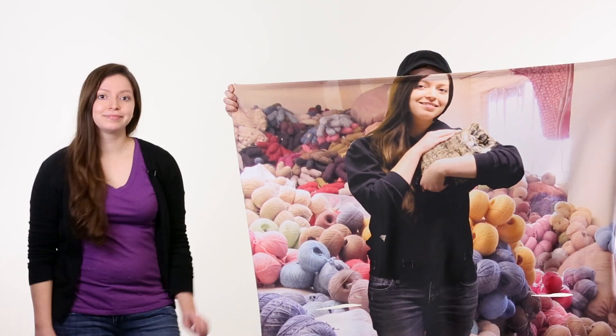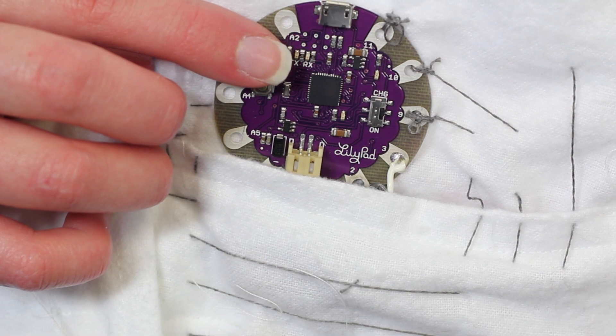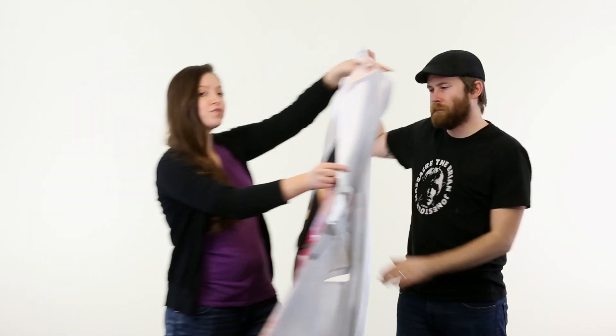First, you're going to want to get a blanket that best represents them. If they spend a lot of time on the computer, we suggest getting two heat pads and a LilyPad Arduino. Then cut two holes for the hands.